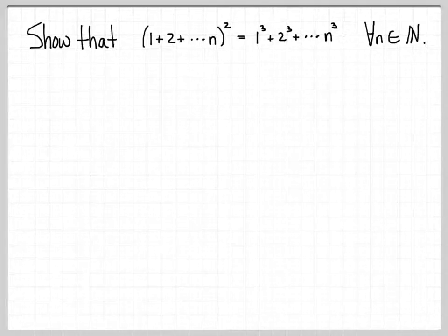This is another example of using mathematical induction to prove that a statement is true for all natural numbers n. The statement we're going to work with is that 1 plus 2 plus dot dot dot to n, that entire quantity squared, is equal to 1 cubed plus 2 cubed plus dot dot dot up to n cubed. So the sum squared is equal to all the cubes summed.